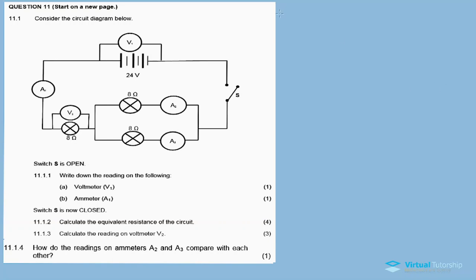We need to answer a few questions regarding this situation. 11.1.1(a): Write down the reading on V1 when the switch is open. V1 is equal to 24 volts. V1 is the voltmeter reading across the power source, so whether your switch is open or closed, your voltmeter reading remains constant at 24 volts.